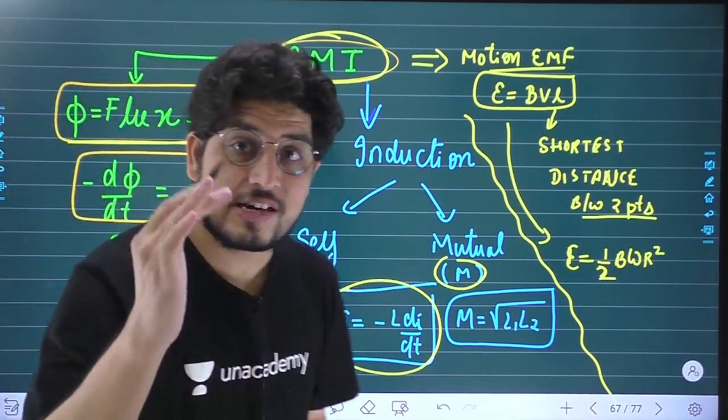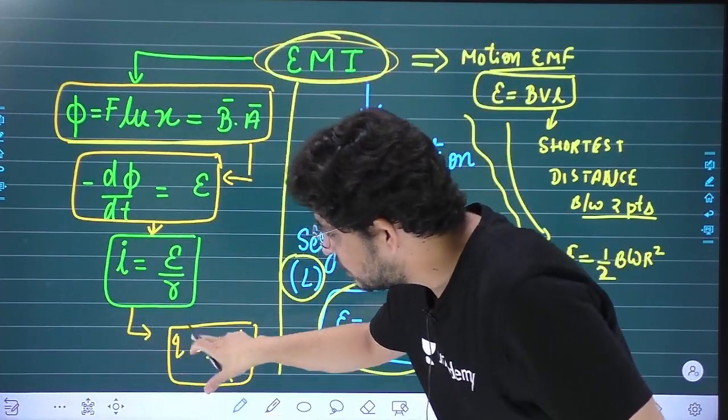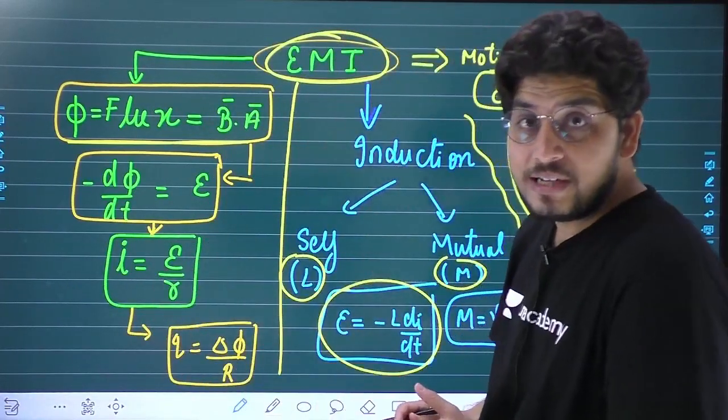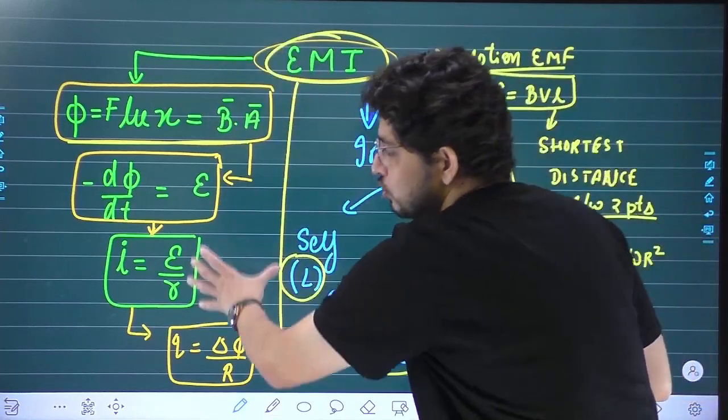If I divide E by R, then the current comes. If we have delta phi, delta phi by R it comes. So many topics have come.